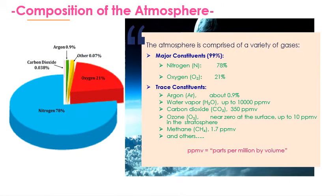The atmosphere is comprised of a variety of gases: nitrogen 78%, oxygen 21%, and trace constituents which include argon, water vapor, carbon dioxide, ozone — which is nearly zero at the surface up to 10 parts per million by volume in the stratosphere — as well as methane and other compositions.